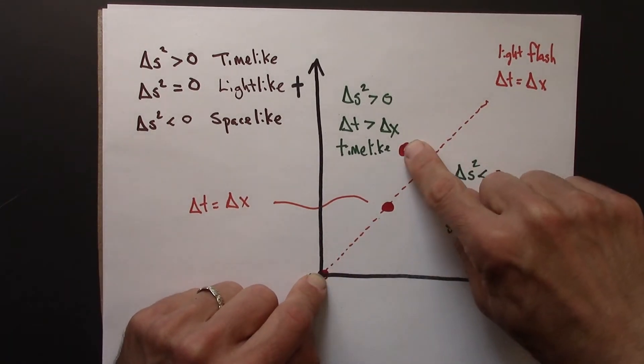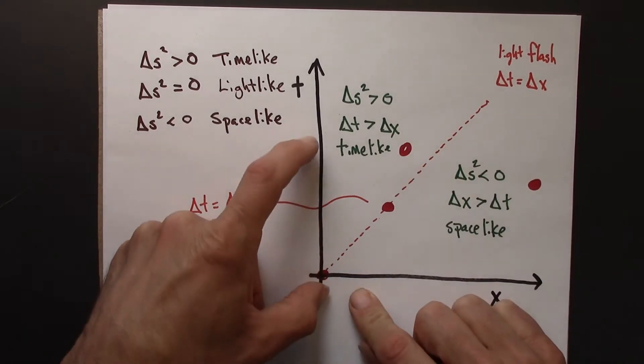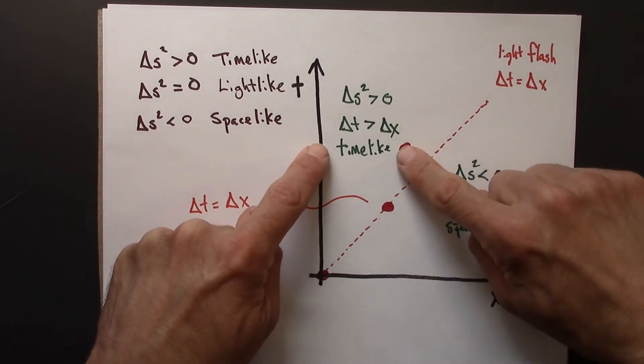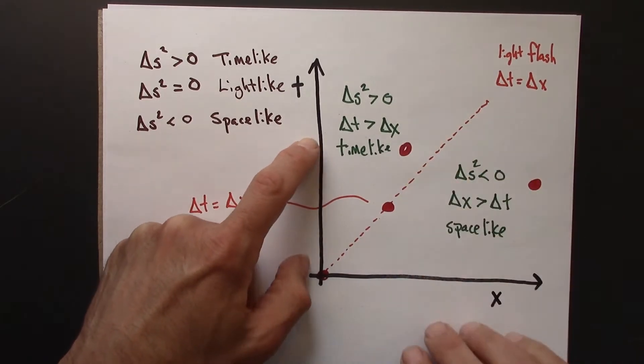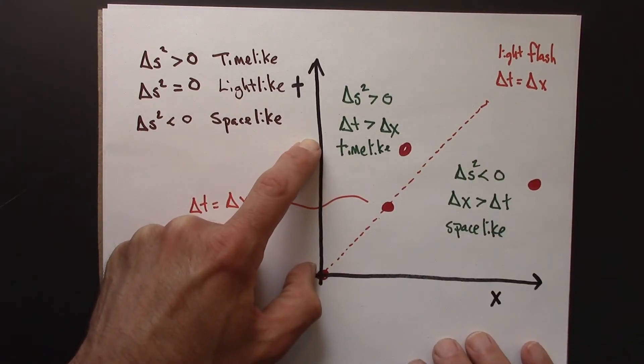Because a causal signal traveling from here to here would travel slower than the speed of light. Why? Because delta t is greater than delta x. So it travels a distance that's less than its time, giving it a slope, a speed of less than one.